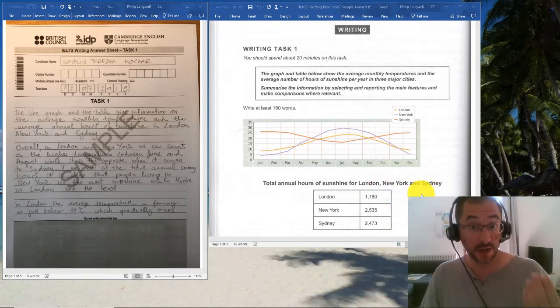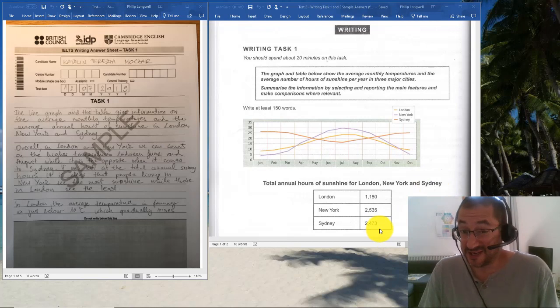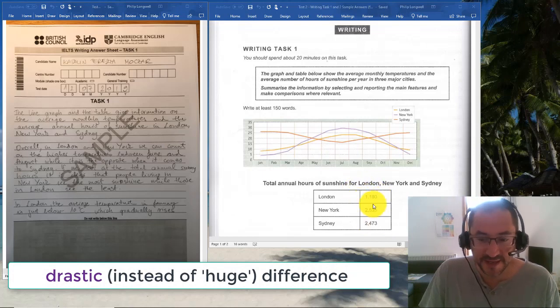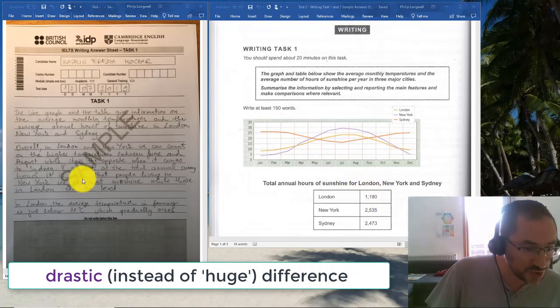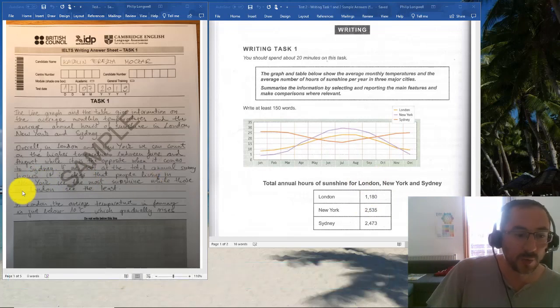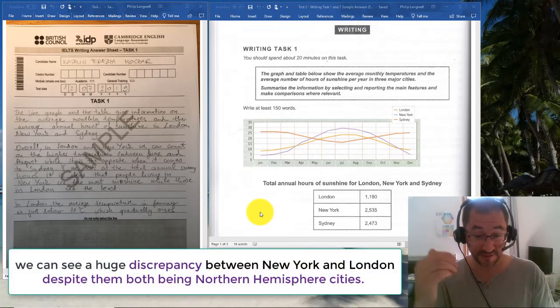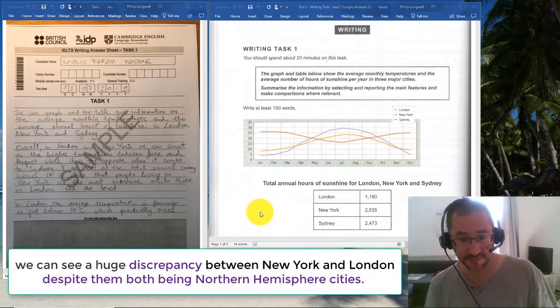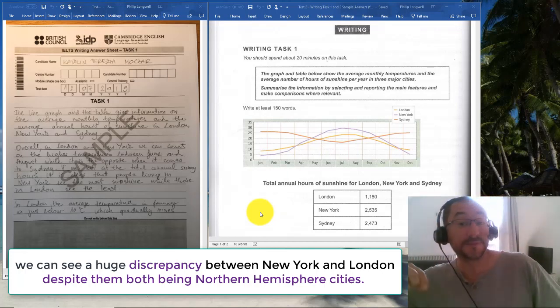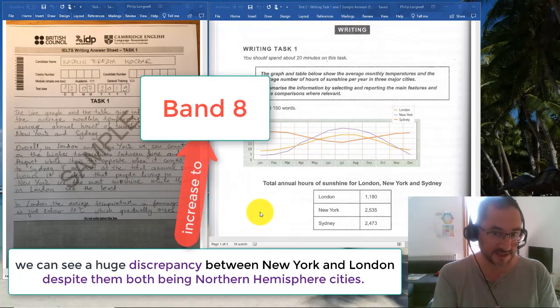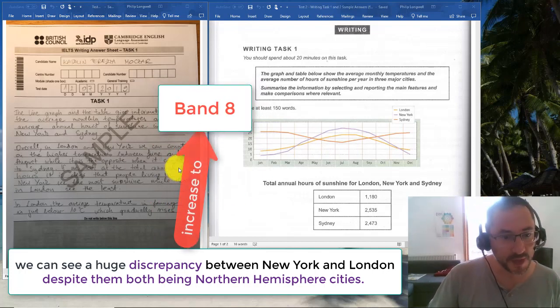Yes, we'd expect Sydney to have a lot of sunshine—it does, and it's similar to New York. However, we could look at this drastic difference. I would highlight the big difference in sunshine here. You do say that New York sees the most sunshine while London sees the least, but we could be more descriptive in our language, use better adjectives to describe this huge discrepancy between New York and London despite them both being northern hemisphere cities. That would get you 7.5 or 8 in task 1.